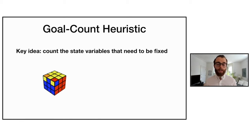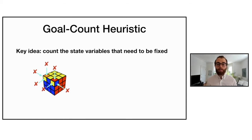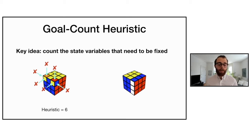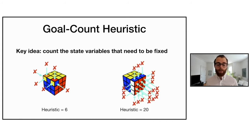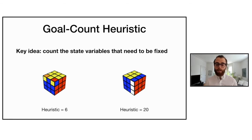Looking at an example Rubik's Cube state, we count the number of mistakes — all the stickers that still need to be moved for the cube to reach the goal configuration. For the first state we count six, giving a heuristic value of six. For another state we get 20, giving a heuristic value of 20.